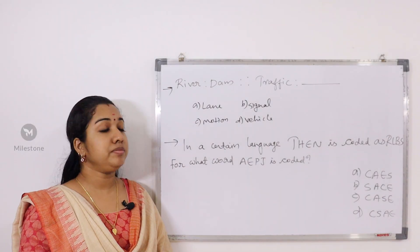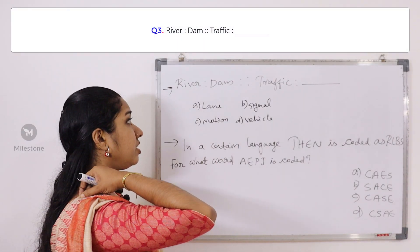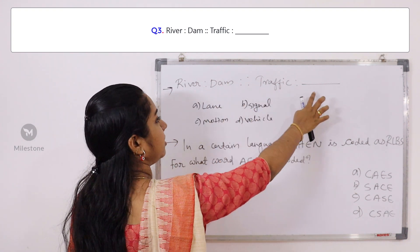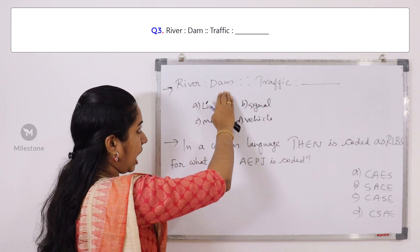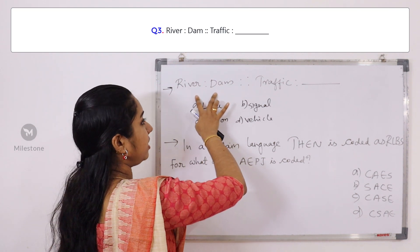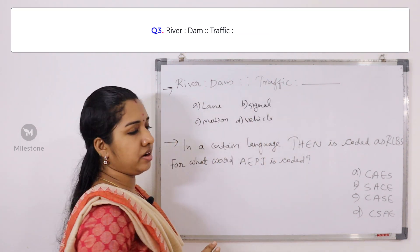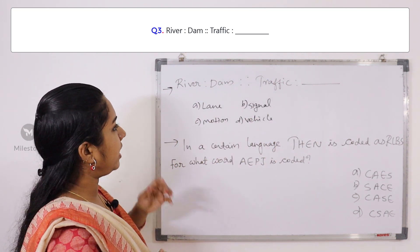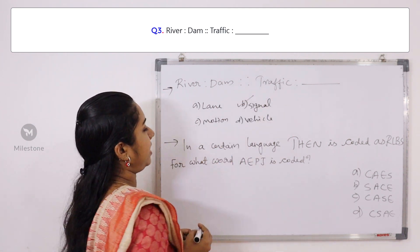Next question: River, dam, traffic, dash. River and dam are one group. Here is traffic. What is the answer? Signal is the answer.